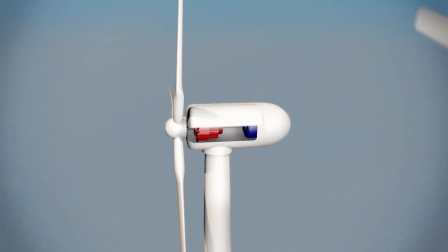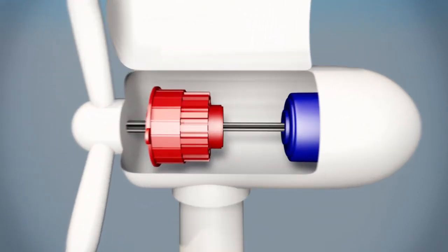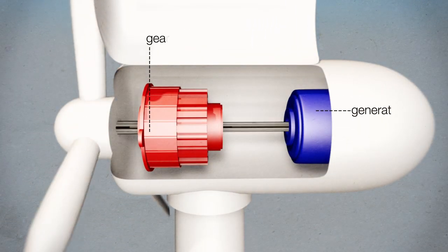Wind turbines have rotors, which are moved by the power of the wind. A generator then creates electricity.